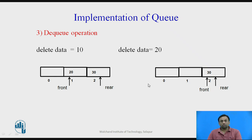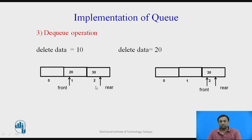Now for the dequeue operation — dequeue removes an element from the queue. While deleting, the first element was 10. To delete it, the front is incremented by plus 1, so now 20 becomes the first element and front points to a[1]. The rear is kept at the same position — it is not incremented or decremented during a dequeue operation. To delete one more element, that is 20, the front is incremented by plus 1 again, with rear kept at the same position, so front now points to a[2] showing 30.